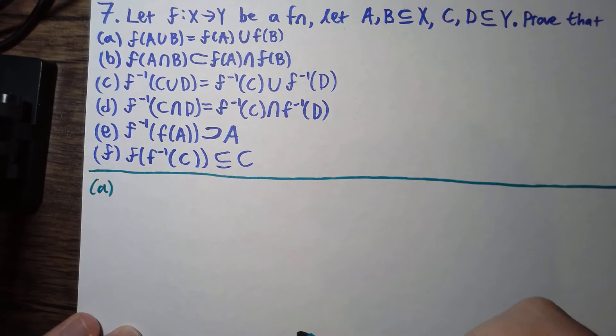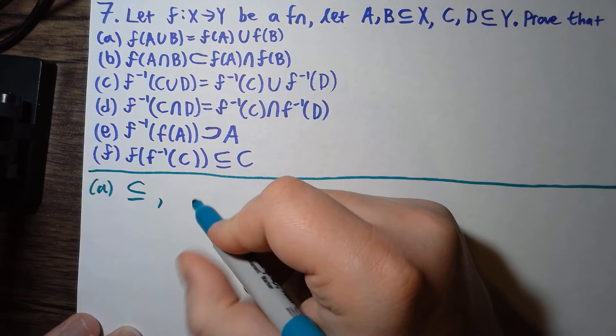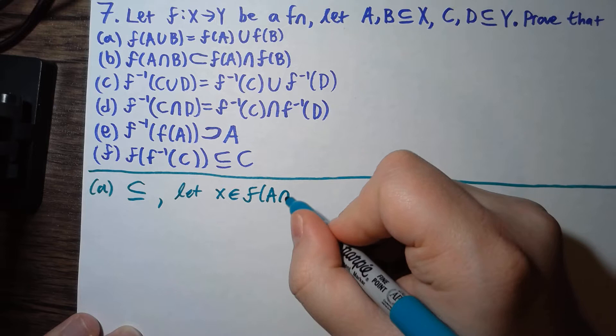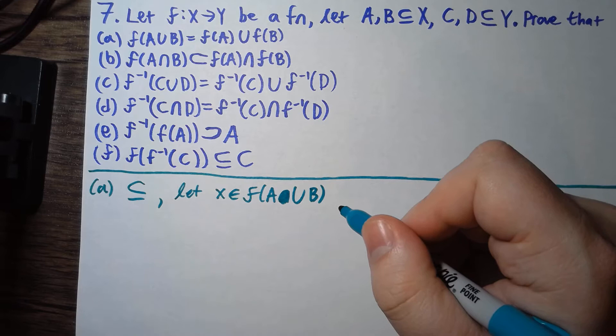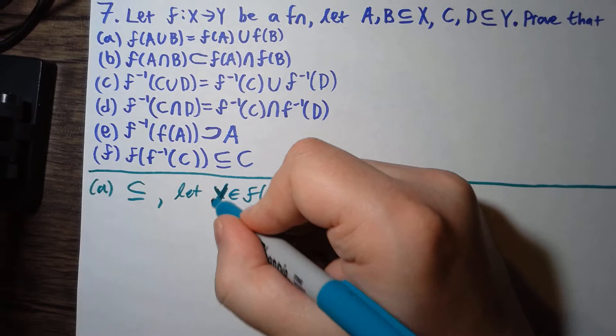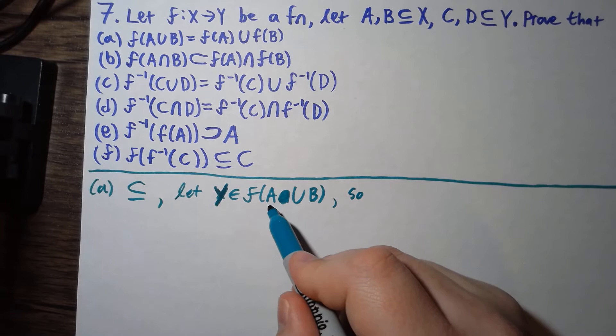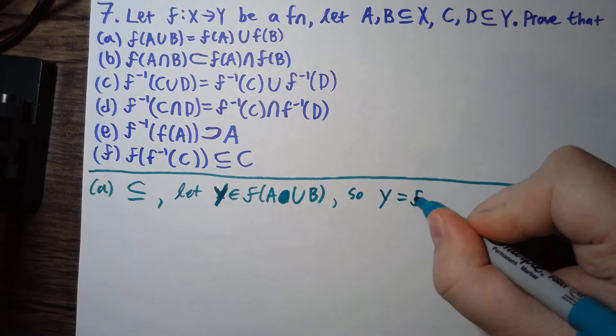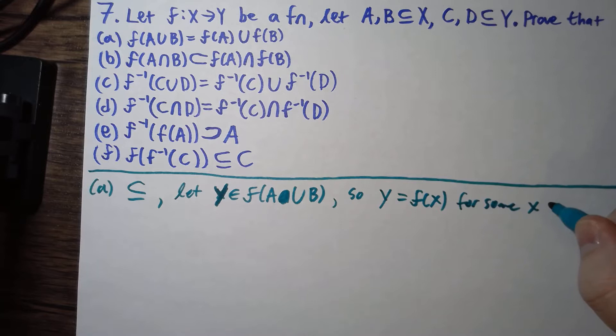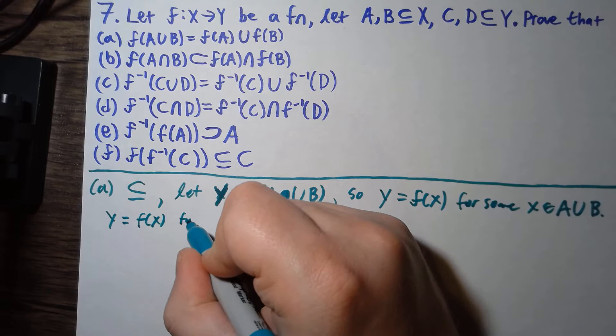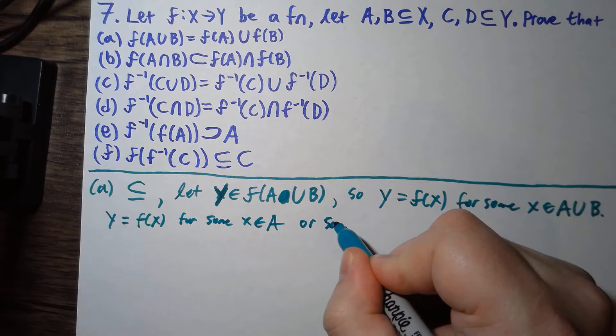For part a, we have to prove two things. To prove this subset equation, let y be an element of f of A union B. So we have that y is equal to f of x for some x in A union B.